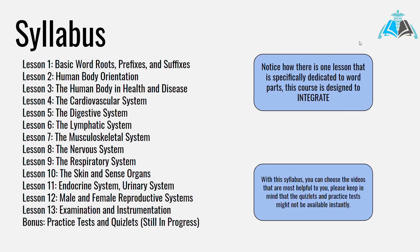We've now reached the syllabus, which is probably what most of you have been watching this video for. We have around 13 actual lessons plus a bonus area. Lesson one covers basic word roots, prefixes, and suffixes. Then we move on to human body orientation, the human body, and health and disease. Lessons four through twelve cover various body systems — the cardiovascular system, digestive system, lymphatic system, and more. Lesson thirteen is examination and instrumentation, which focuses more on the electronic and technological side of medicine.